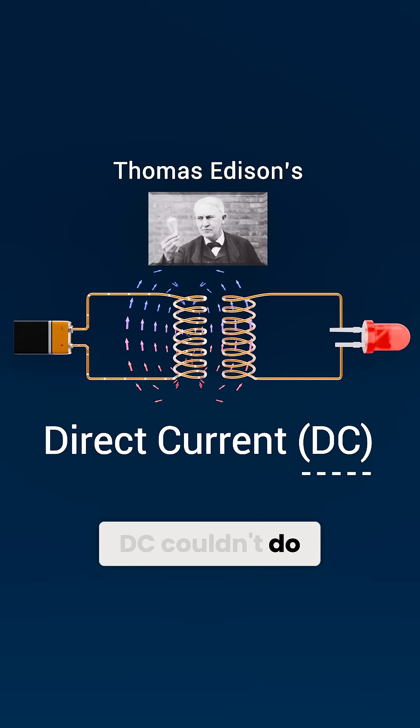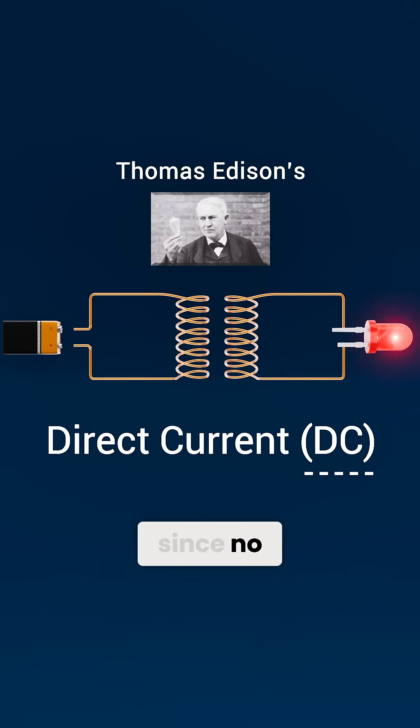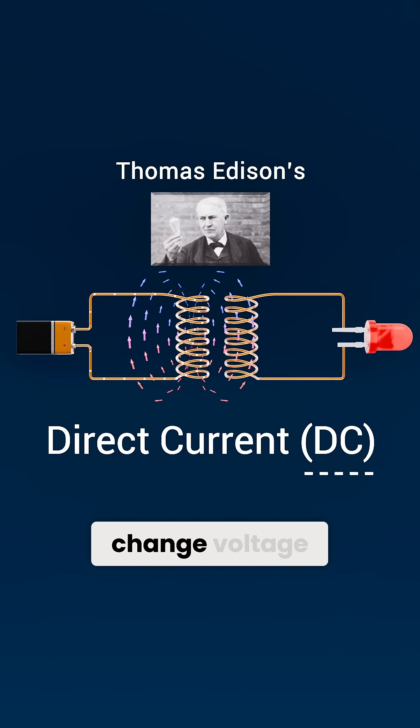At the time, DC couldn't do this economically since no practical method existed to change voltage levels.